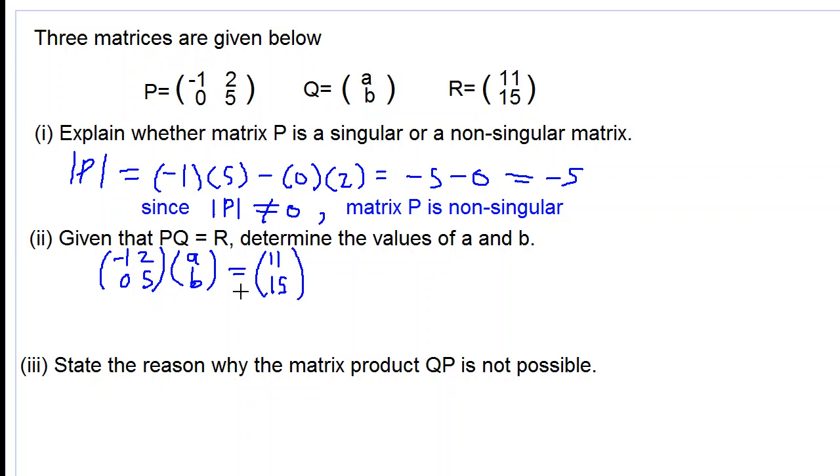Let's multiply row by column. Negative 1 times a plus 2 times b which is 2b is equal to 11, and 0 times a is 0 plus 5 times b is 5b is equal to 15.